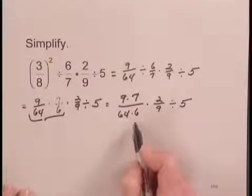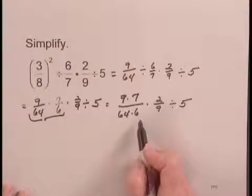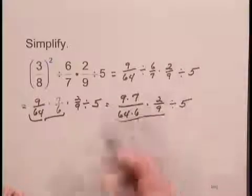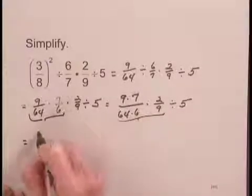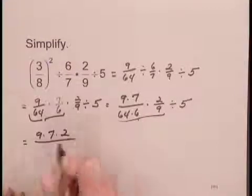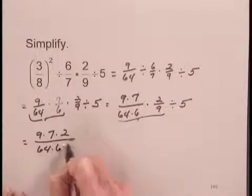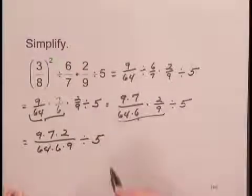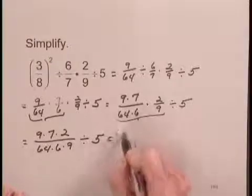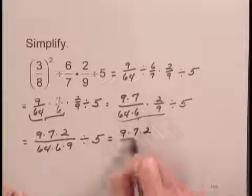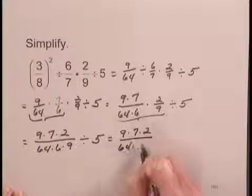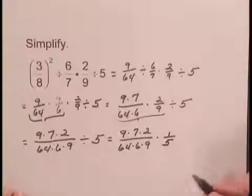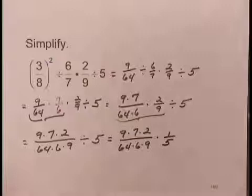I'm going to leave this in factored form instead of multiplying it out, because it will make it easier to simplify at the end if I already have some factors. Next, we'll do this multiplication. That gives us 9 times 7 times 2 over 64 times 6 times 9, and that's divided by 5. To divide by 5, I multiply by the reciprocal of 5, so I write this as 9 times 7 times 2 over 64 times 6 times 9 times 1 fifth.